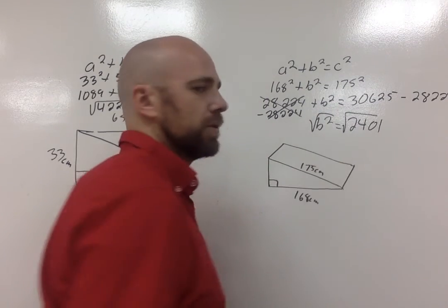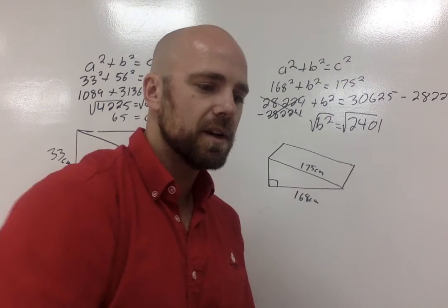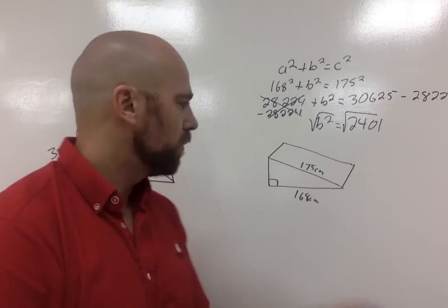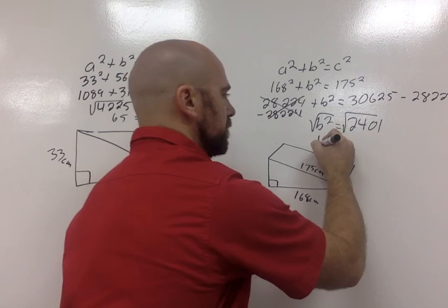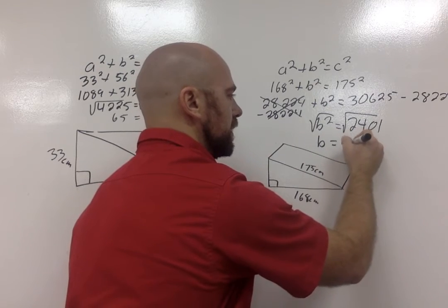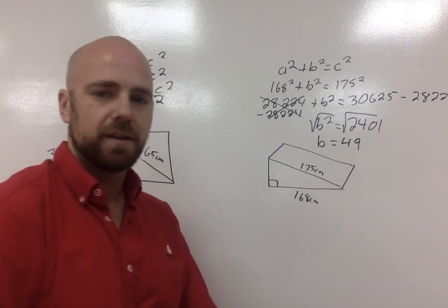Okay, so I'm minus 28,224, and I'm left with 2,401. Now if I can square root both of these sides, I'm going to get what the height is of this wedge. So B is going to equal 49.